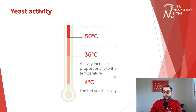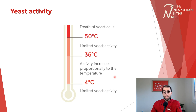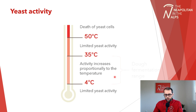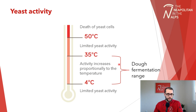After 35 degrees and up to 50 degrees, we have a reduction in yeast activity. Around 55 to 60 degrees — when we're in the baking stage — we have the death of the yeast cell. For fermentation, we focus on the range between 4 and 35 degrees, which covers either room temperature or cold fermentation in the fridge, usually between 4 and 6 degrees. This is the range for our dough fermentation.